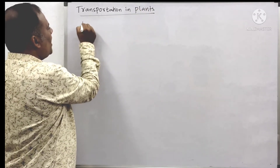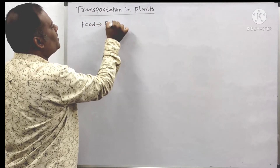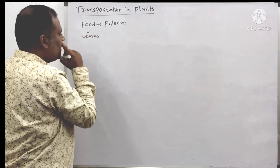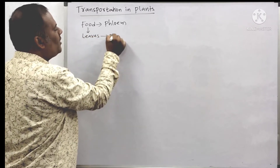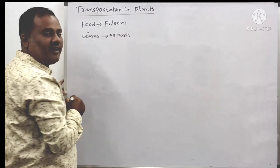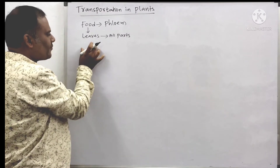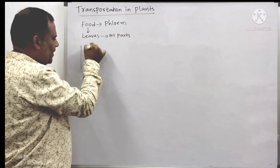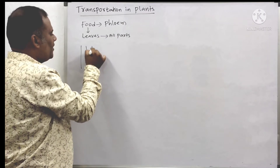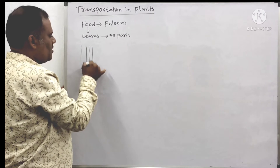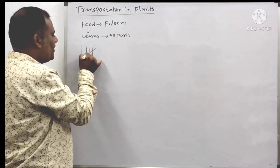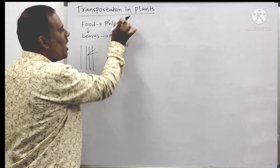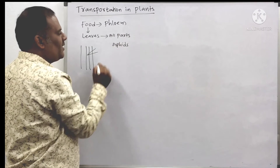For transportation of food in plants — how is food transported? By the tissue called phloem. You know that food is actually formed and stored in leaves. From the leaves, it has to go to all parts of the plant. How can it go? With the help of phloem tissues. A small activity demonstrates how phloem tissue transports food.